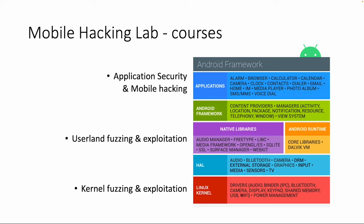That mobile hacking training focuses more on mobile red teaming. Next we have the native libraries, and exploitation of native libraries is more the scope of the user-level fuzzing and exploitation training. We will also have a kernel fuzzing and exploitation training, which will specifically focus on vulnerabilities in the Linux kernel, which is also the kernel used by Android.